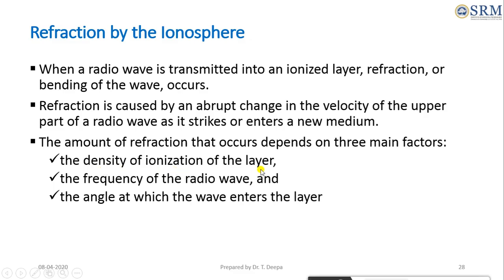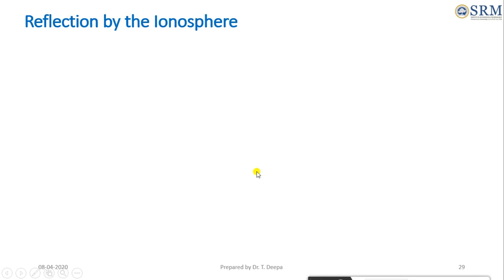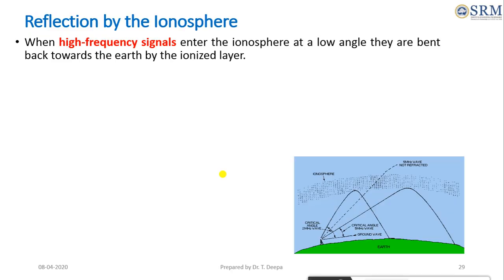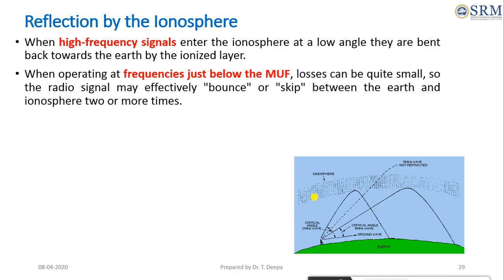The three main factors are: the density of ionization of the layer, the frequency of the radio wave, and the angle at which the wave enters the layer. When high frequency signals enter the ionosphere at a low angle, the waves are bent towards the earth by the ionized layer. When operating at a frequency just below the maximum usable frequency, loss is quite small, and the radio signal may effectively bounce or skip between the earth and ionosphere.